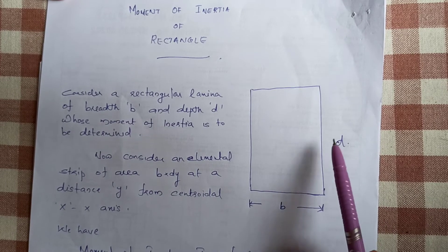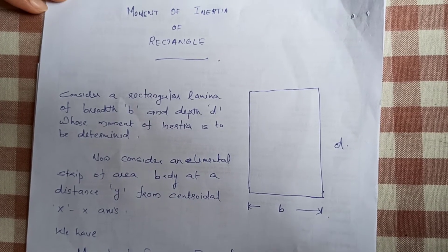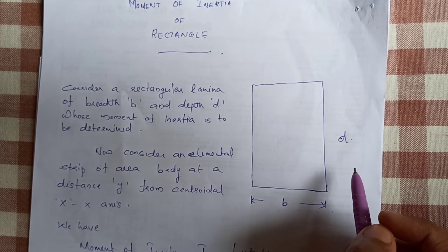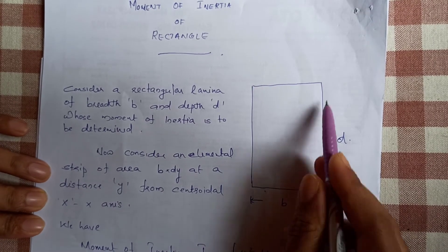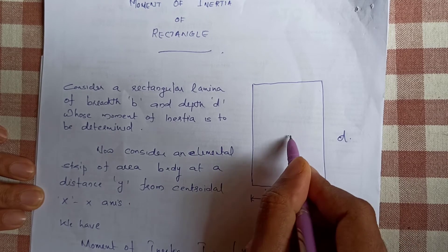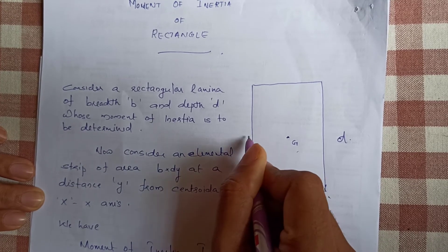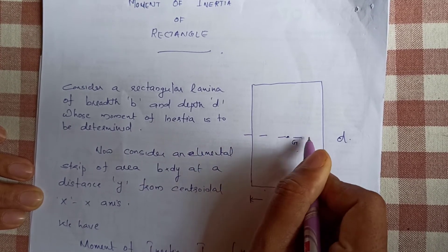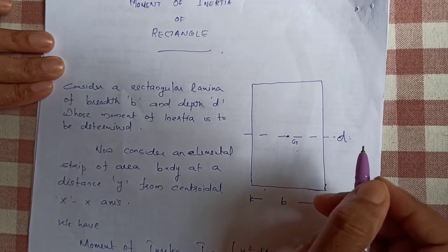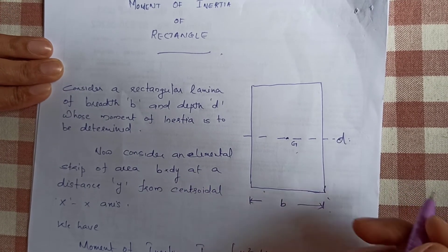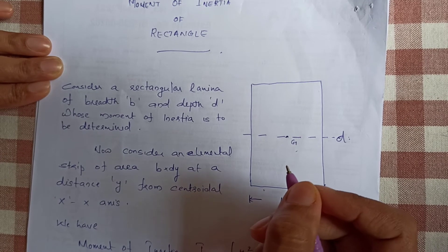Now we consider this rectangle of breadth B and depth D. What we are doing is finding the centroidal axis. The centroid is the passing axis. The rectangle's centroid is at B by 2 and D by 2 — the middle point is the centroid G. The centroid lies on the horizontal axis, which is the X-axis — the centroidal X-axis.